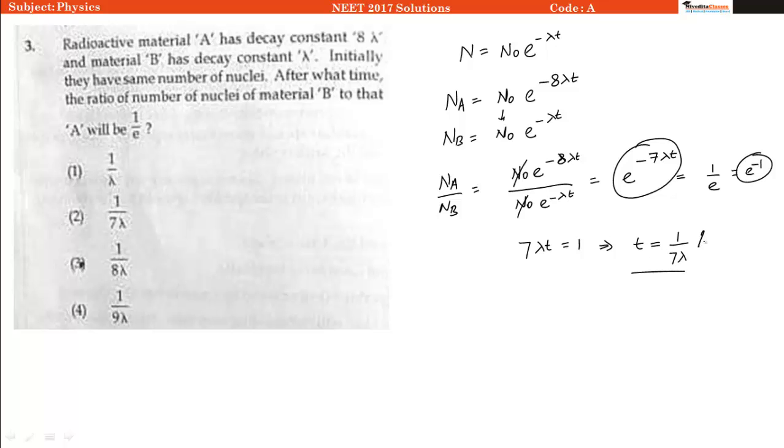So after this much time the ratio of number of nuclei of B to A will equal 1 by E, which is option number 2.